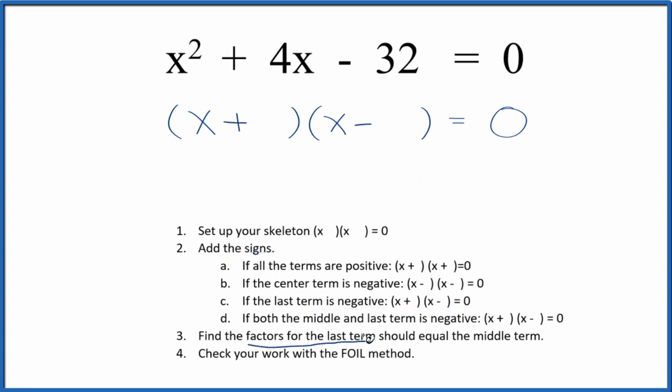Now we can find the factors for the last term. That's the negative 32, and they should add up to the middle term, the 4 here. So if you think about the factors of 32, you could have 1 times 32. That won't work.